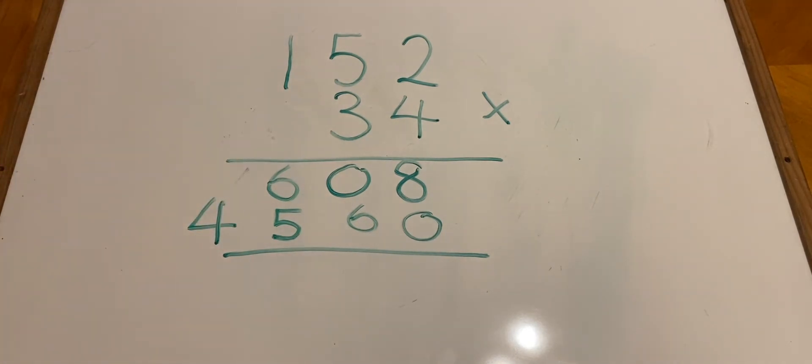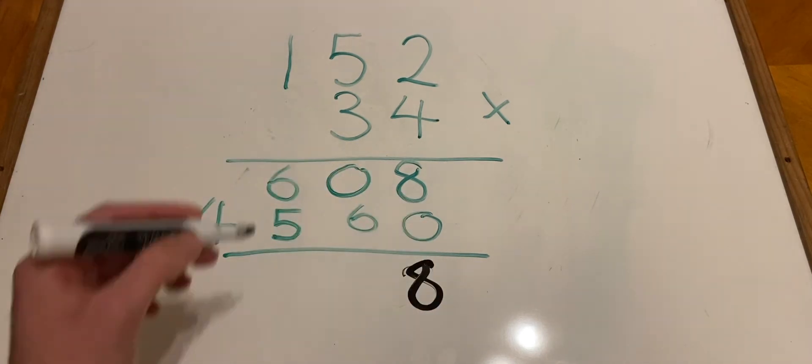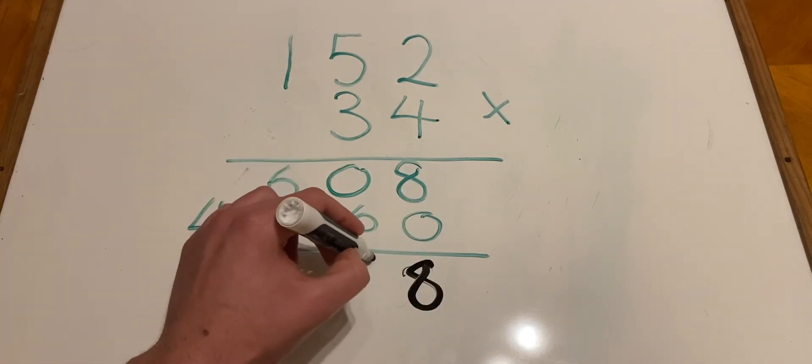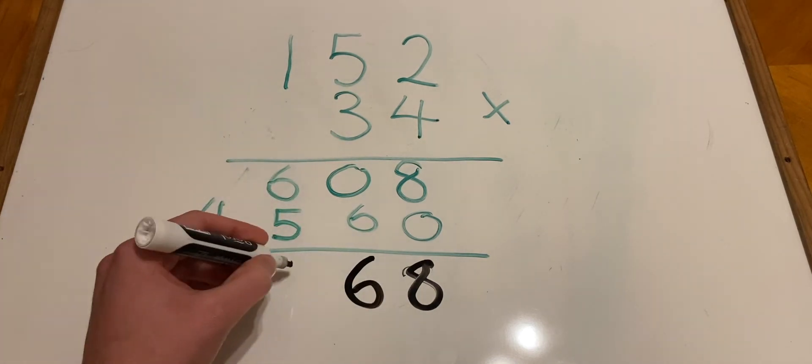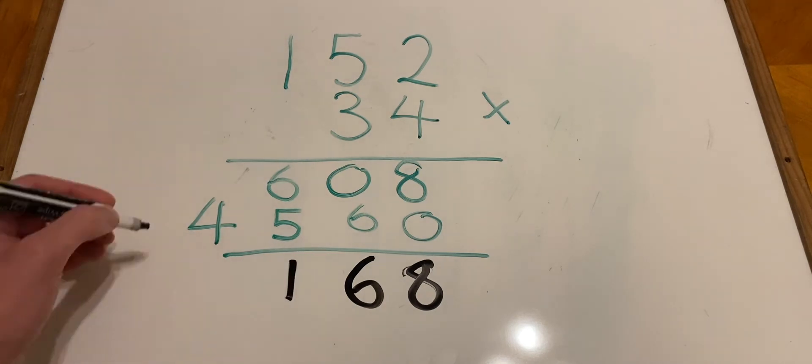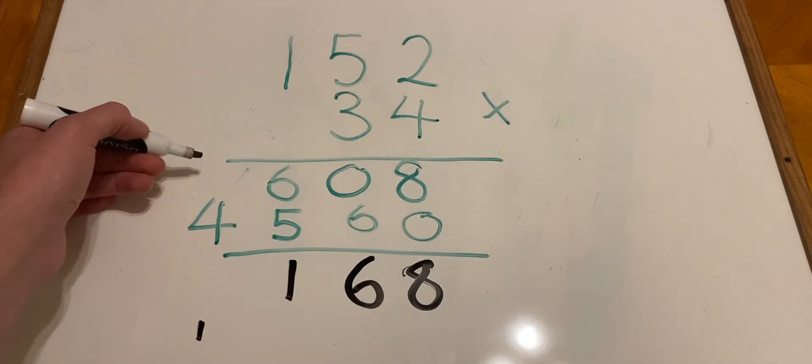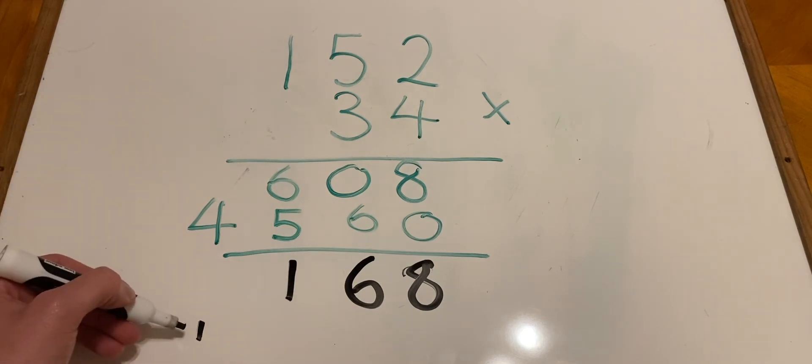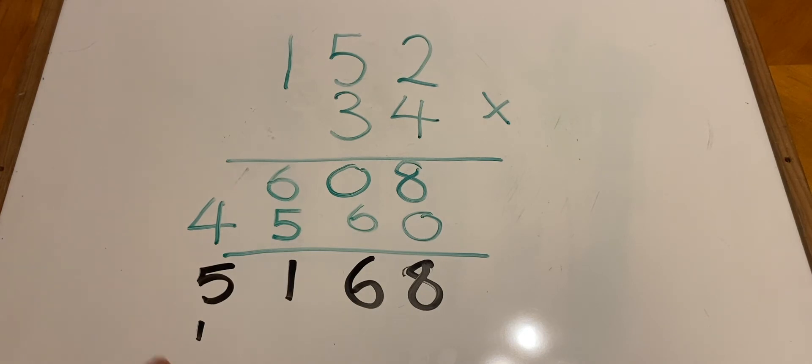Now we've got two answers. All we have to do now is add those together. 8 plus 0 is 8. 0 plus 6 is 6. 6 plus 5 is 11. There's one set of ones in 11, and we'll carry this other 1 over. And 4 plus nothing is 4, but we've got a 1 here to add as well, so that makes 5. So our final answer is 5,168.